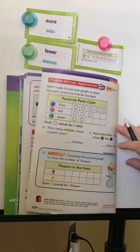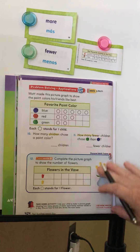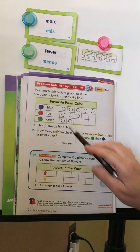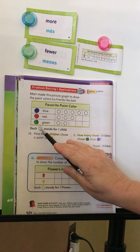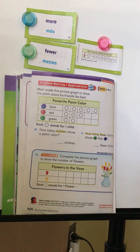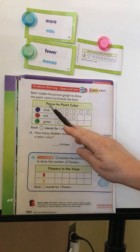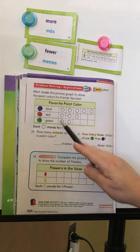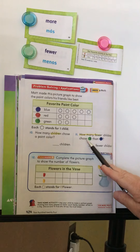The last page is a graph that's already been made, so we don't have to ask anybody. Matt made this picture graph to show the paint colors his friends like best. We see blue, red, and green. Each circle stands for one child who got asked the question. Question ten: how many children chose a paint color? Count all the circles and write the answer.